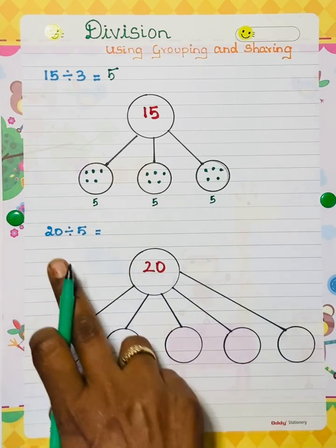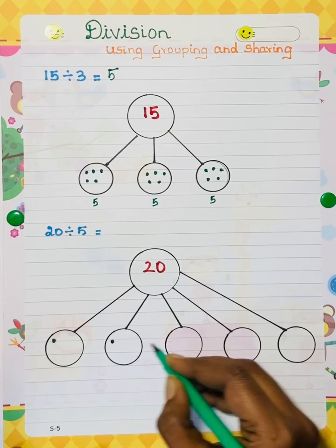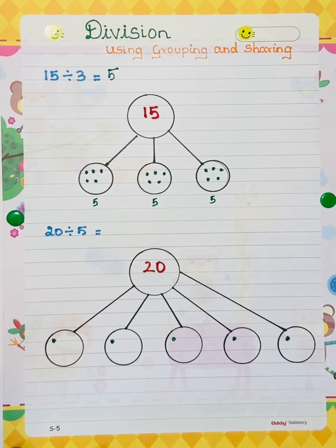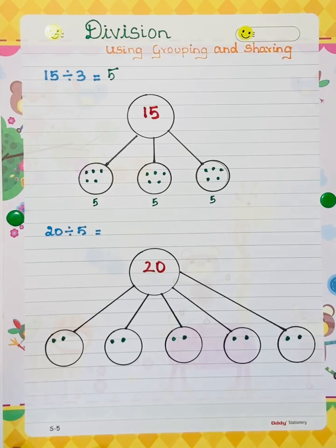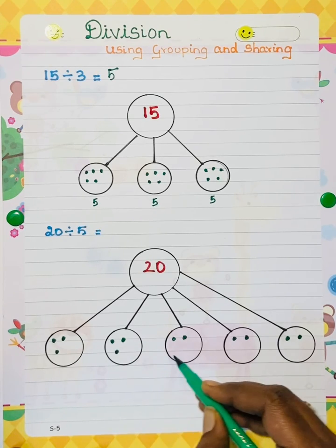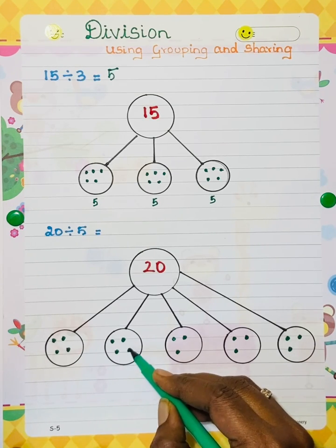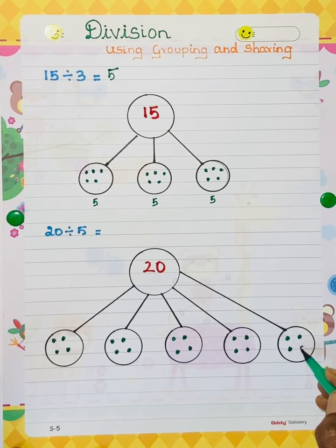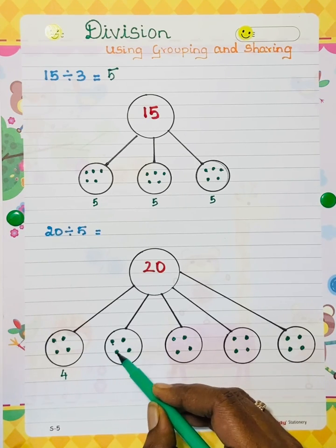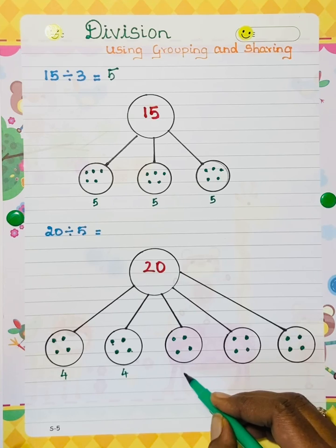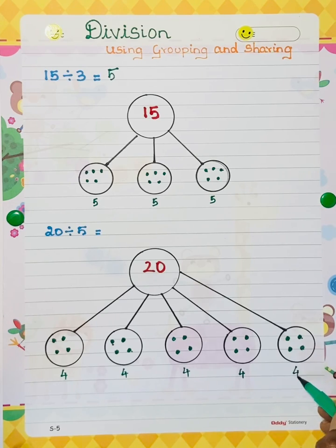1, 2, 3, 4, 5. Now we have to divide 20 into the 5 circles. Count: 1, 2, 3, 4, 5, 6, 7, 8, 9, 10, 11, 12, 13, 14, 15, 16, 17, 18, 19, 20. Now count the dots: 1, 2, 3, 4 — 1, 2, 3, 4 — 1, 2, 3, 4 — 1, 2, 3, 4. See, equal grouping.